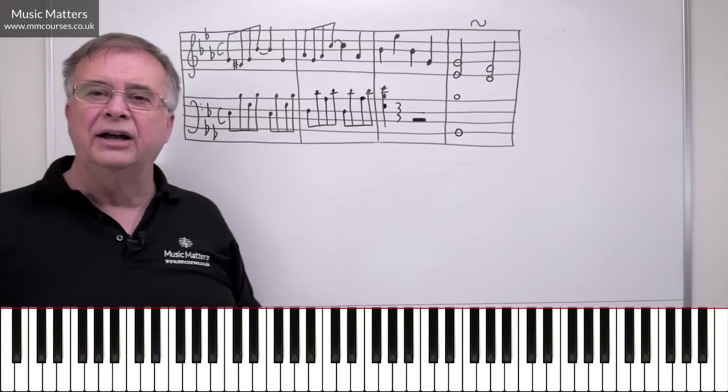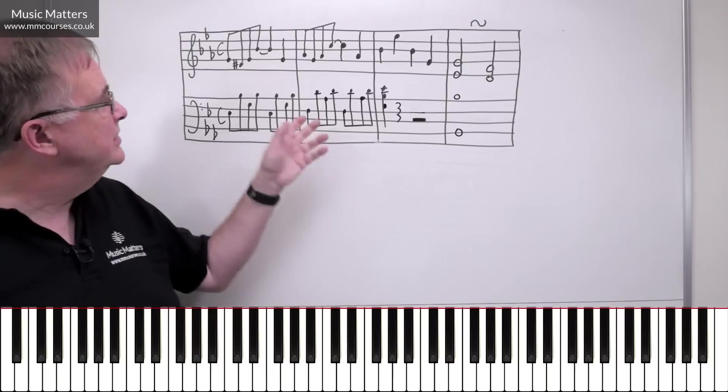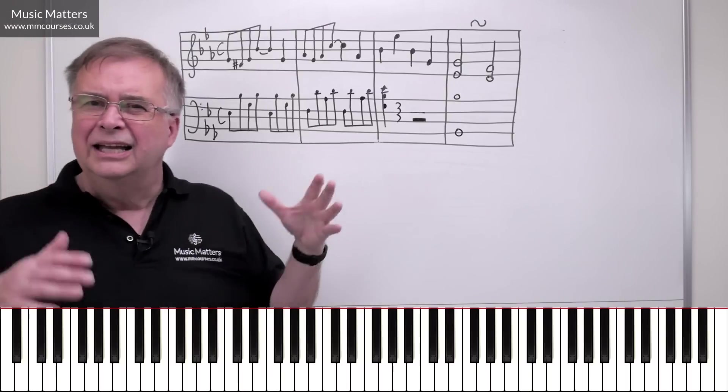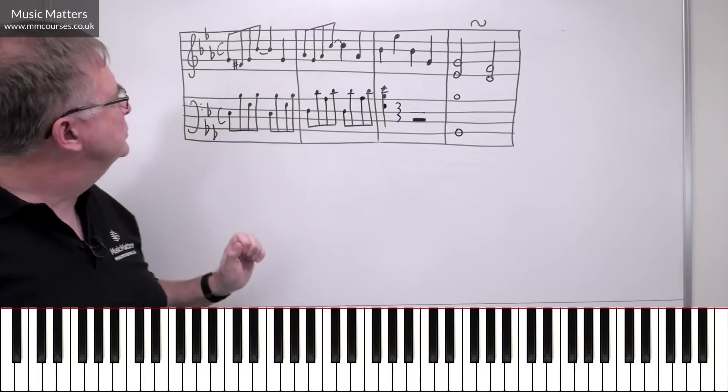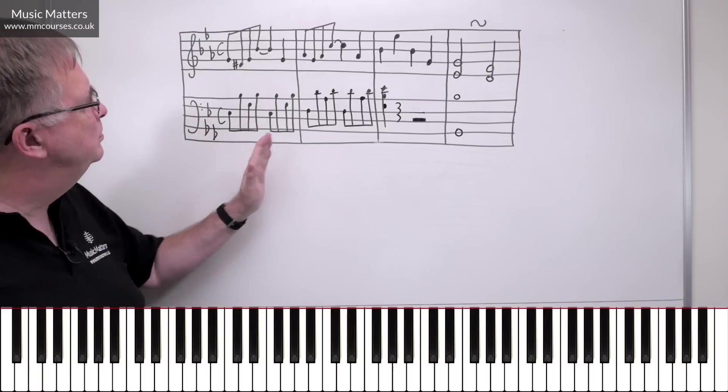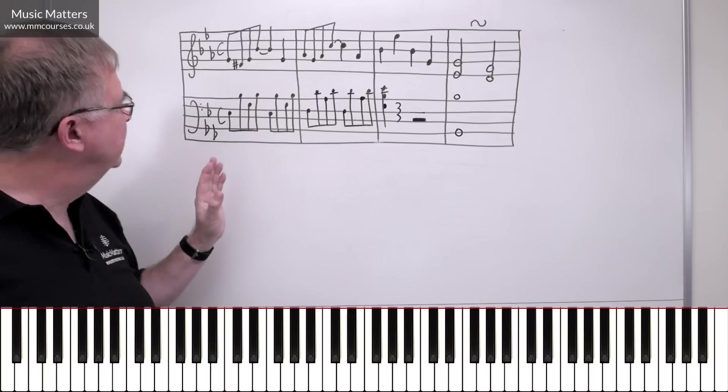But if you want to replace the Vc with a VIIb, then you can do that. That's exactly what I've done here. So it's a fairly kind of standard chord progression from Baroque and classical times. But I've got one chord per bar here, so I'm trying to keep it simple, so I'm not over-complicating the harmony.